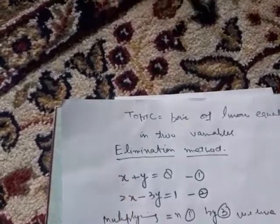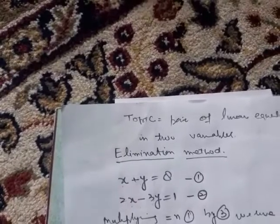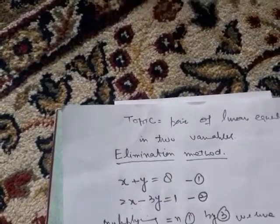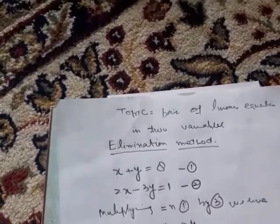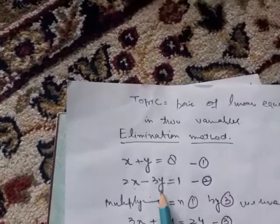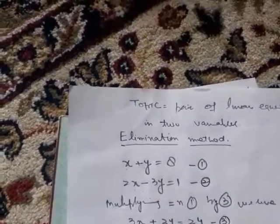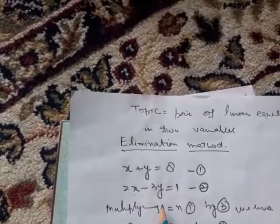We will call this equation three. After multiplying, we get 3x plus 3y equals 24. In equation three it is plus, and in equation two it is minus.